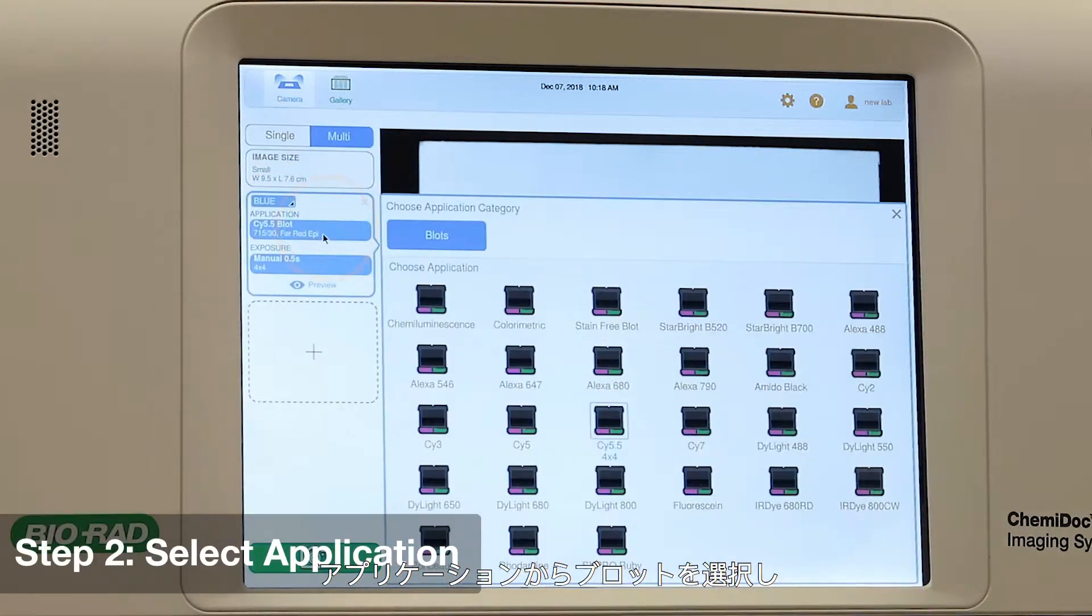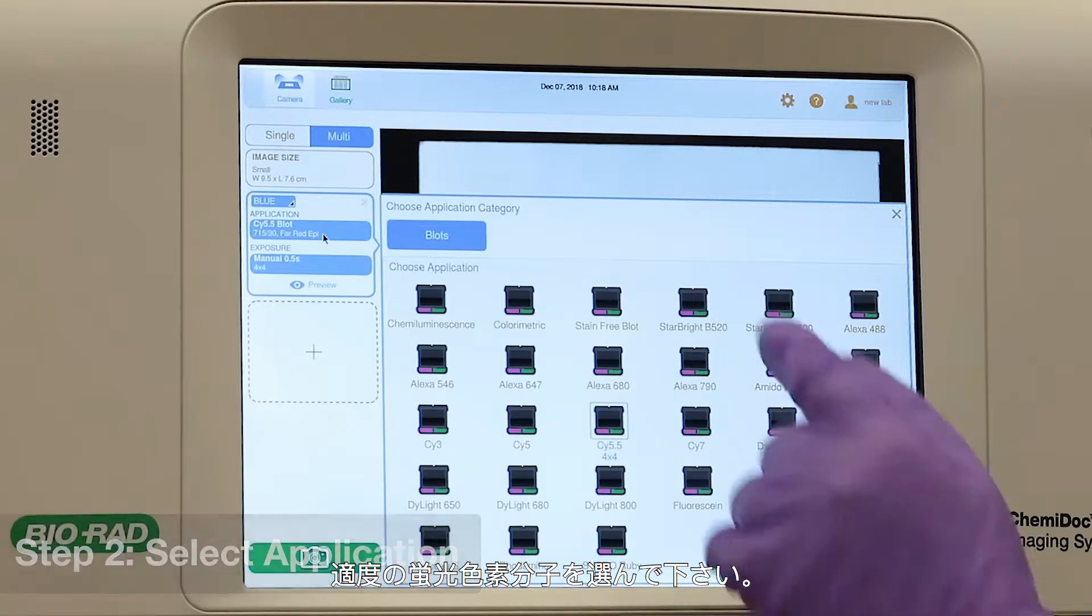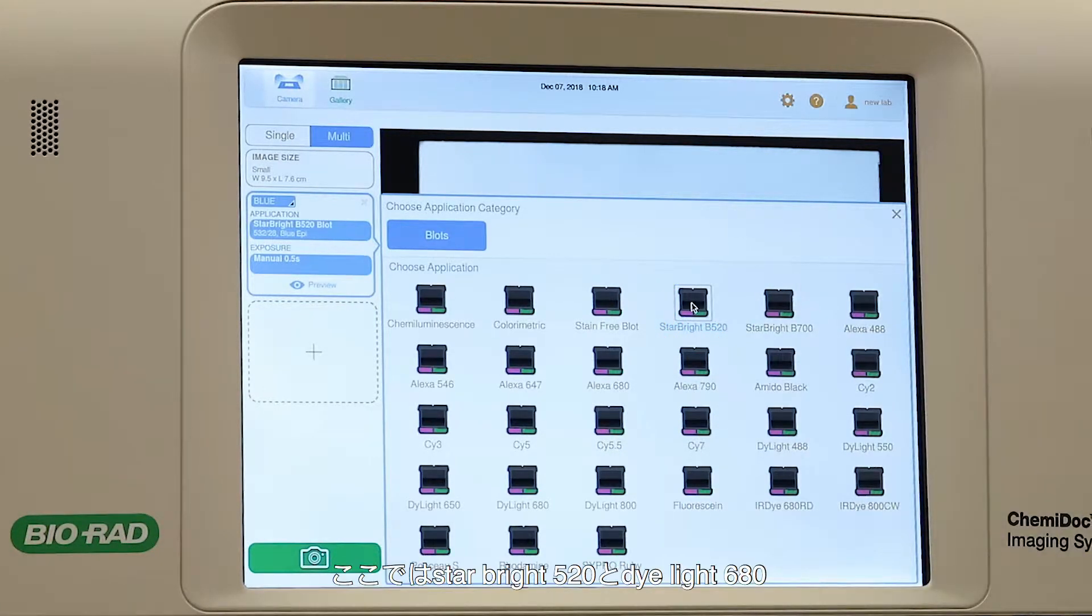Tap Application, select Blots, and choose the appropriate fluorophore. Here we are visualizing Star Bright 520, Dye Light 680, and Dye Light 800.